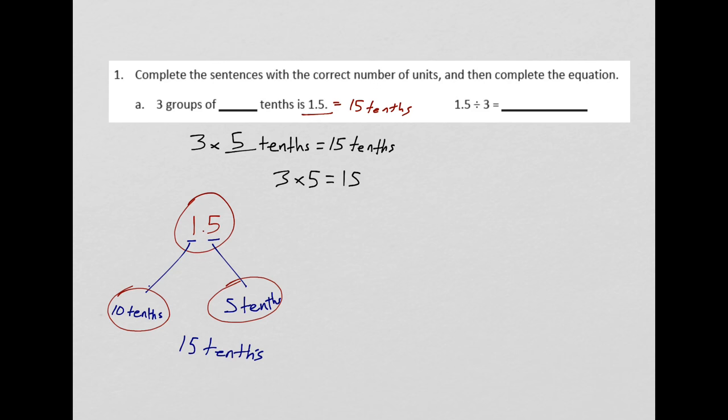So, 3 times blank tenths equals 15 tenths. Let's imagine for a minute that it's not tenths, that it's bananas. 3 times how many bananas would be 15 bananas? Well, one of my basic multiplication facts is 3 times 5 equals 15. So, I can imagine that that's 5. Well, now let's look over at the other question. 1.5 divided by 3 equals blank. Let's kind of think this one through from scratch. This one, I'm not going to do that whole business with the number bond. Let's focus on the numbers right in front of me. So, 1.5 divided by 3.